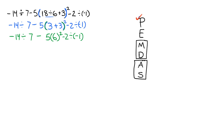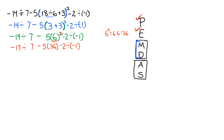All right, next, we're done with our parentheses. We need to move to our exponents. Do we have any exponents? Yes, we do. So before we multiply 5 times 6, we have to take 6 and square it. 6 squared is 6 times 6, which is 36. So we have 5 times 36. Drop everything else down — minus 7, divided by 14, negative. Now we look at multiplication and division. We actually have three sets. Moving left to right: negative 14 divided by 7 is negative 2. Drop everything else down. Then 5 times 36 — 36 times 5: 6 times 5 is 30, carry the 3; 3 times 5 is 15, plus 3 is 18. So we have 180.